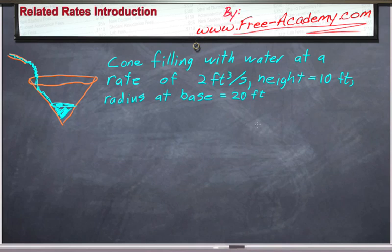That's exactly what we're going to do here. We've been given a cone, its radius is 20 feet, and its height is 10 feet, and it's filling with water at the rate of 2 cubic feet per second. Let's say that this is like a swimming pool or something like that, and we want to find how fast is the water rising in this pool at any given time. This is a related rates problem.